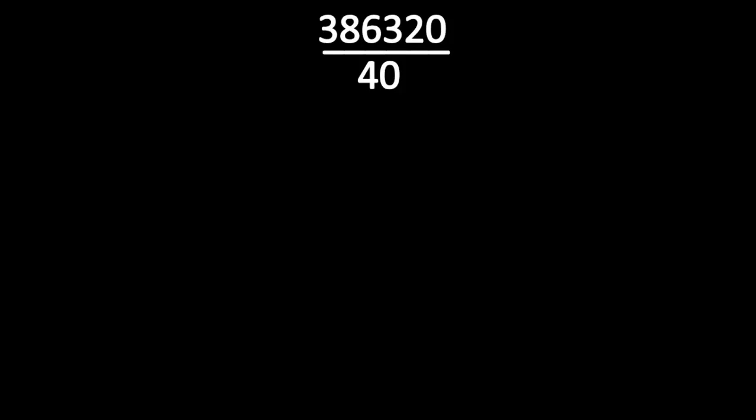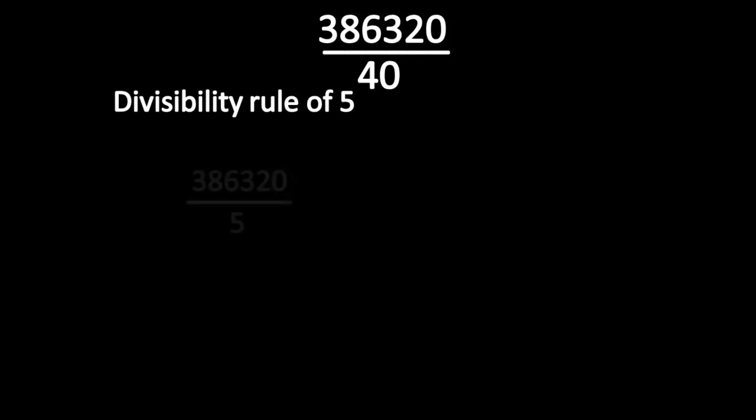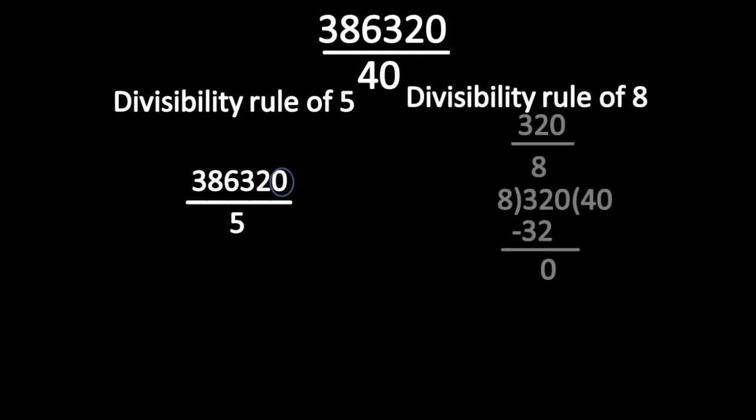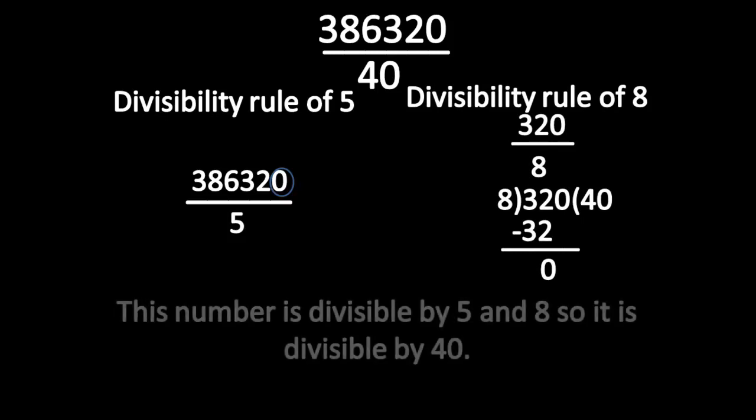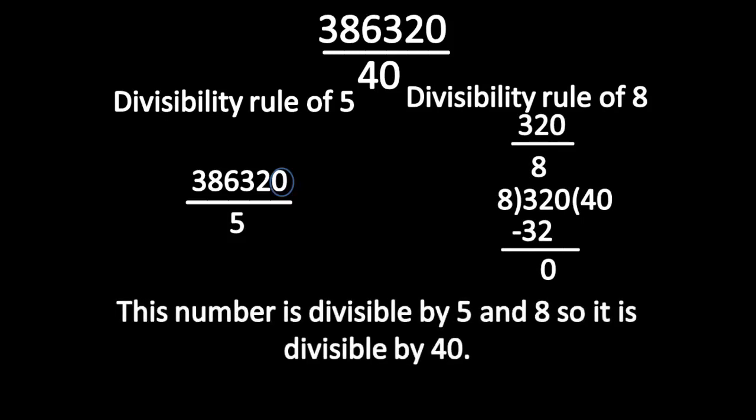As per the rule, first check whether this number is divisible by 5. You already know how to use the shortcut method for divisibility of 5. Now let us check whether this number is divisible by 8. As per the rule, divide the last three digits by 8. This number is divisible by 8. This number is divisible by both 5 and 8.